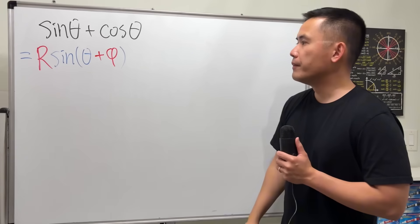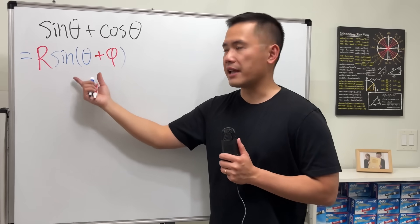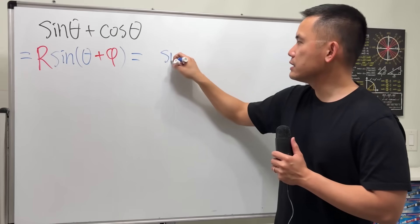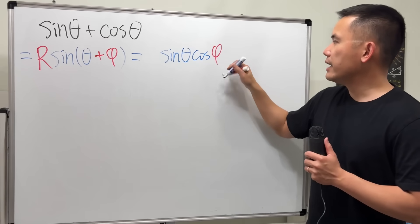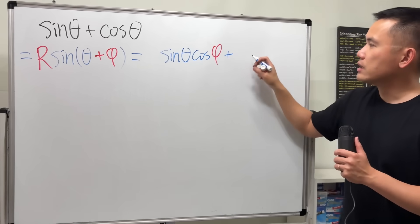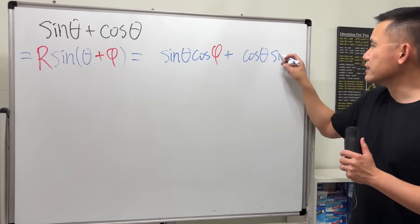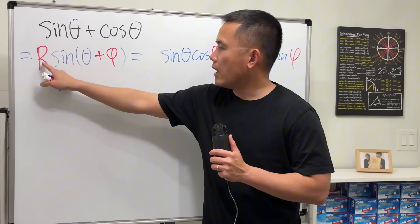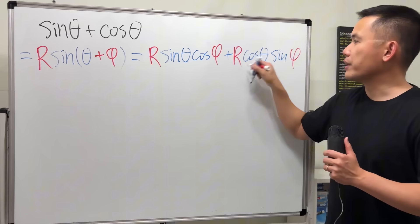And our goal is to figure out what R and phi will be so that this and that are identical. To make this happen, we can use the angle sum identity to expand sine of this part. So that will be sine of the first times cosine of the second, and then we add cosine of the first times sine of the second. This is how you can remember it. And then multiply R with this, so we will have to multiply the R right here and then R right here.